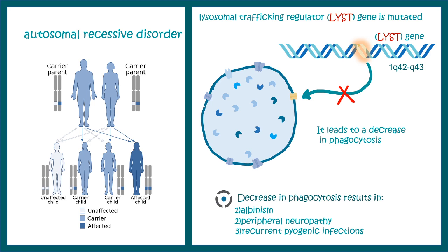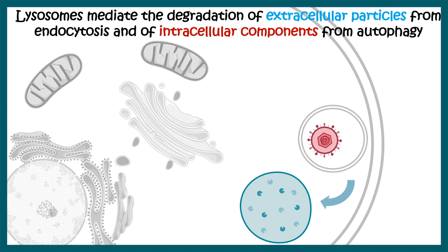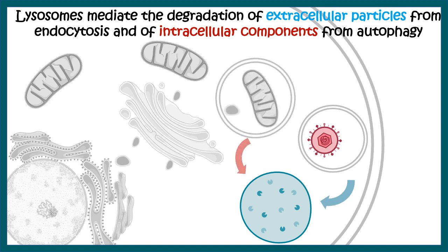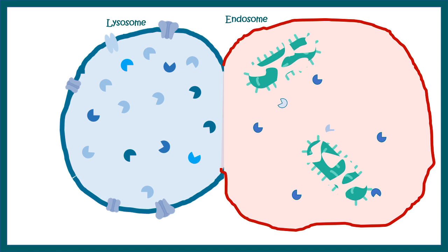Lysosomes mediate degradation of extracellular particles such as bacteria or a virus by forming endolysosomes, and they can also recycle senile organelles. In a normal situation, when bacteria enter our body, they are engulfed by a phagocytic cell, which then fuses with a lysosome to form a phagolysosome. The harsh lysosomal enzymes then degrade the bacteria, eliminating the threat.